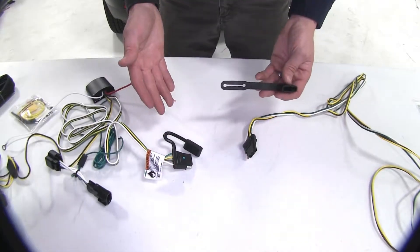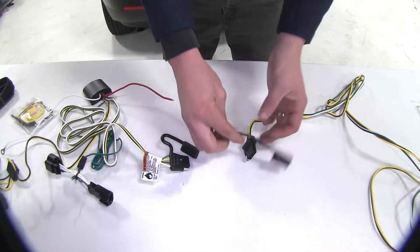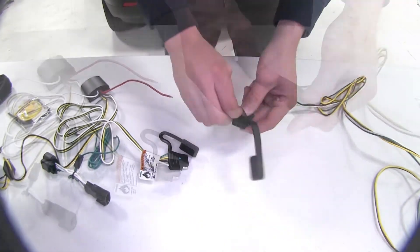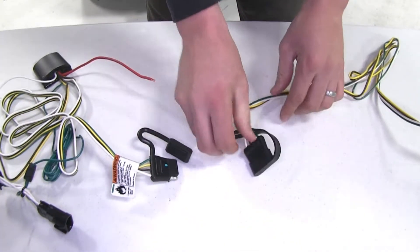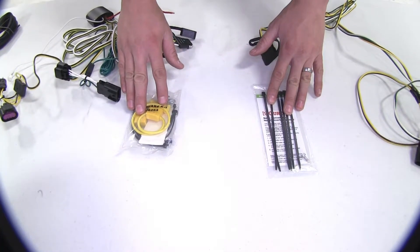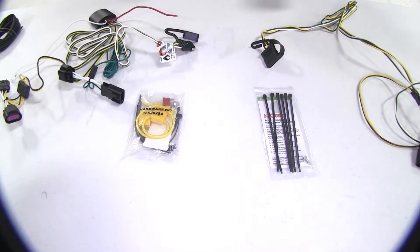They both come with dust caps. The Tekonsha's is attached. The Curt's you'll have to install. When it comes to tidying up your install, both are going to come with zip ties so you can bind up your wires.